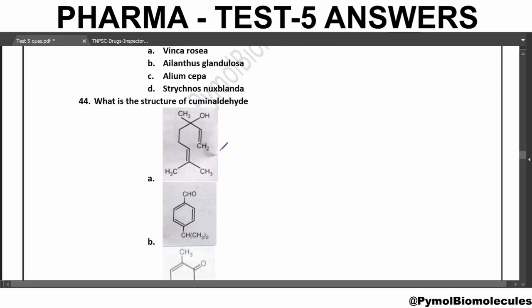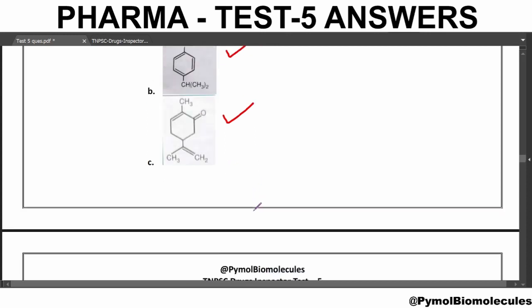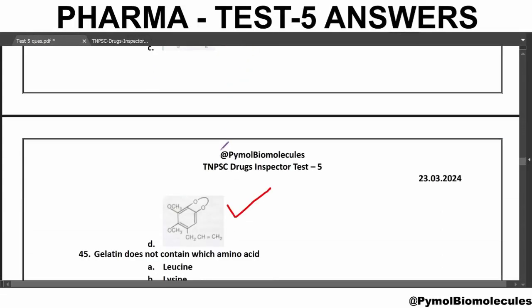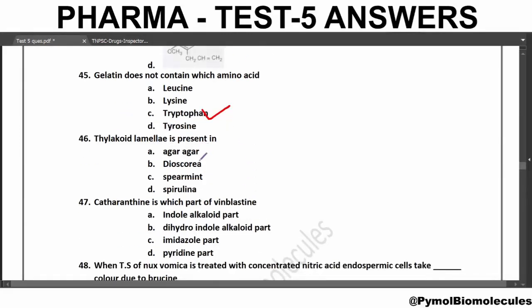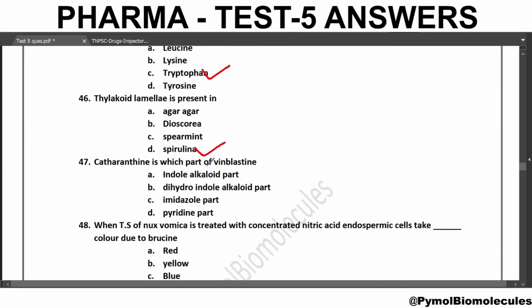The structure of Cuminaldehyde was previously discussed. This is the structure of Coriandrol, this is Cuminaldehyde, option 3 is Carvone, and this is Dill-Apiol. Gelatin does not contain tryptophan. Thylakoid lamellae is present in Spirulina. Catharanthine is the dihydroindole alkaloid part of Vinblastine. The chloroplast is absent in Spirulina; Chlorophyll A is present but Chlorophyll B is absent in Spirulina.